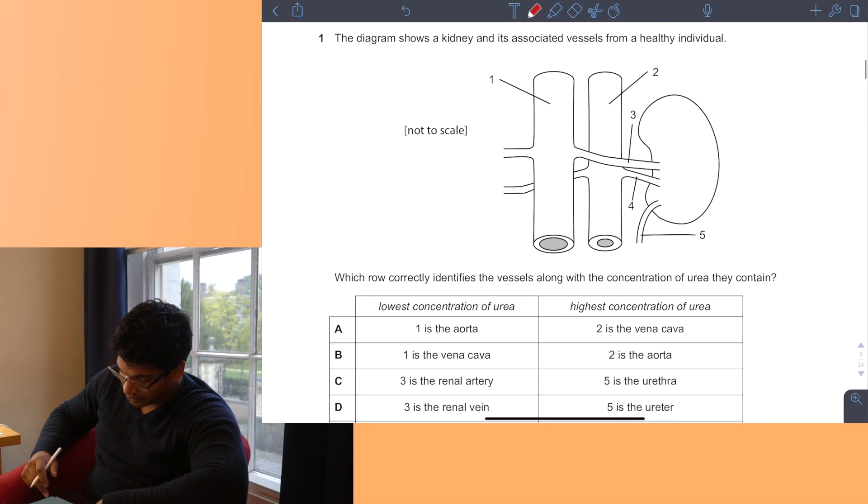First question. The diagram shows a kidney and associated vessels from a healthy individual. Which row correctly identifies the vessels along with the concentration of urea? So this vessel is thin-walled with a big lumen, that must be a vein, and that must be an artery. This is the ureter, the pipe coming out of the kidney going to the bladder.